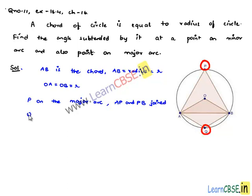Also, consider Q on the minor arc and join AQ and QB.